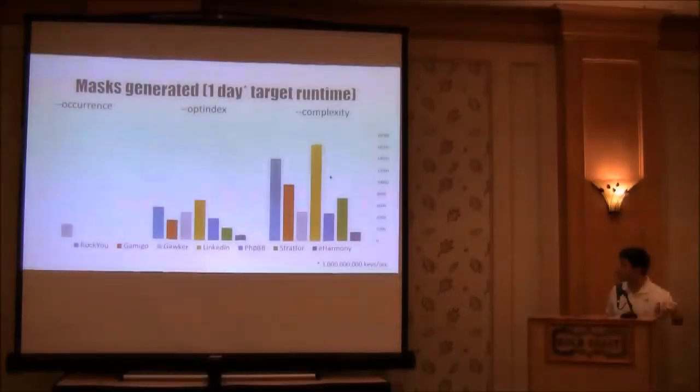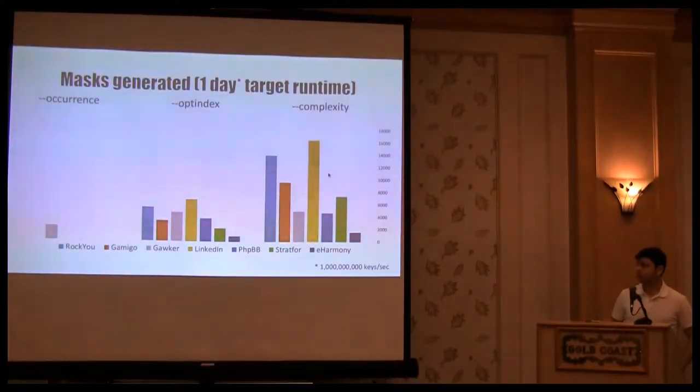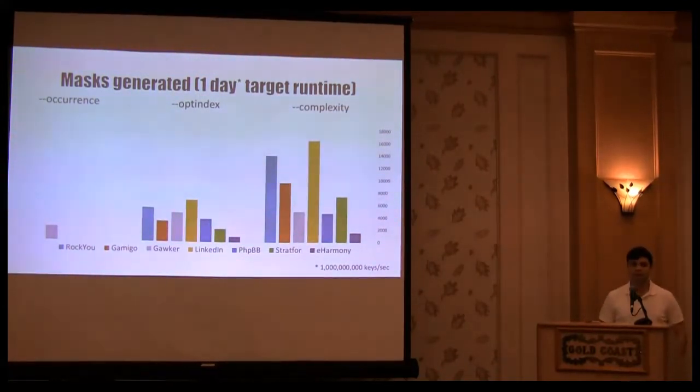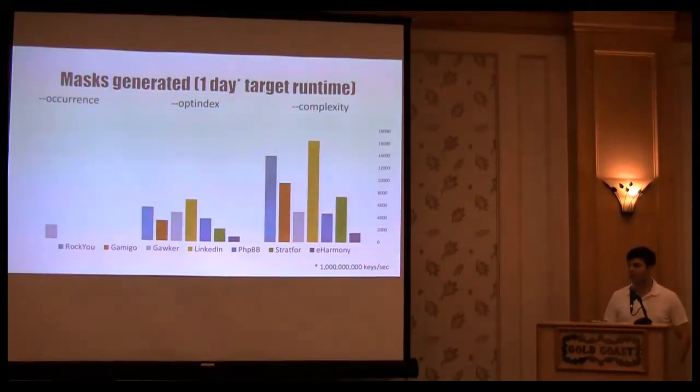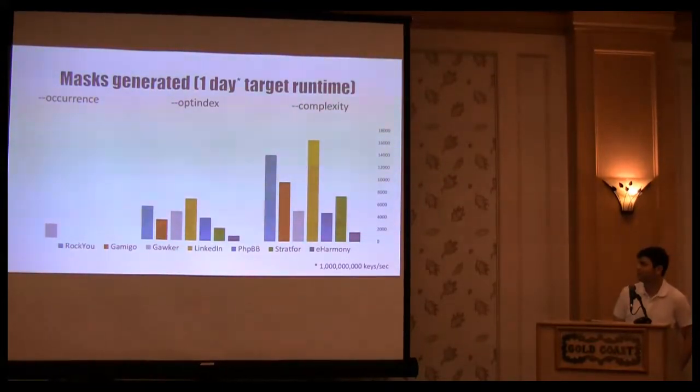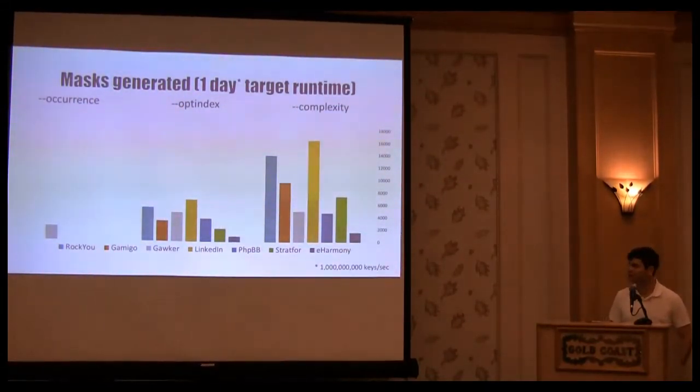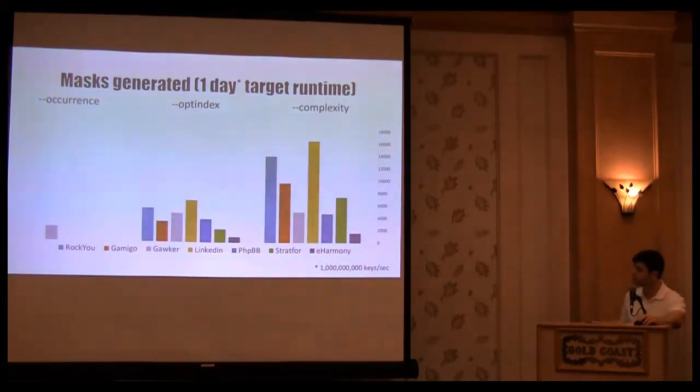At the same time, the sheer number of masks generated, you can see with complexity, because I'm trying to squeeze in as many possible fast masks, there will be somewhere in the range of 16,000 masks. Occurrence, you basically generate one or two masks, and then you're done. You're just exhausted all your time that you have allocated. Again, the golden middle is op_index, and it's very successful.